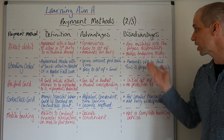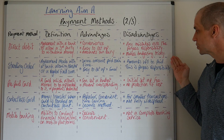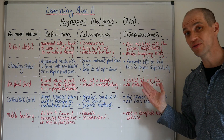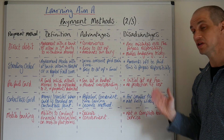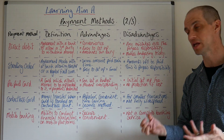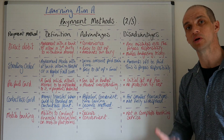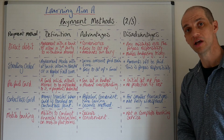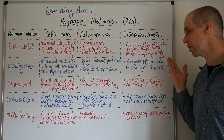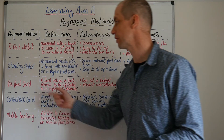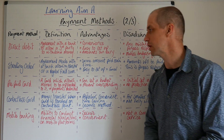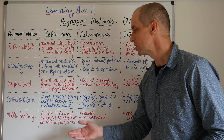Standing orders are also easy to cancel, as are direct debits. However, amounts will be paid regardless, so you've got to make sure you've got enough money in your bank account, because otherwise you might be forced into an unauthorized overdraft, which can be pretty expensive.